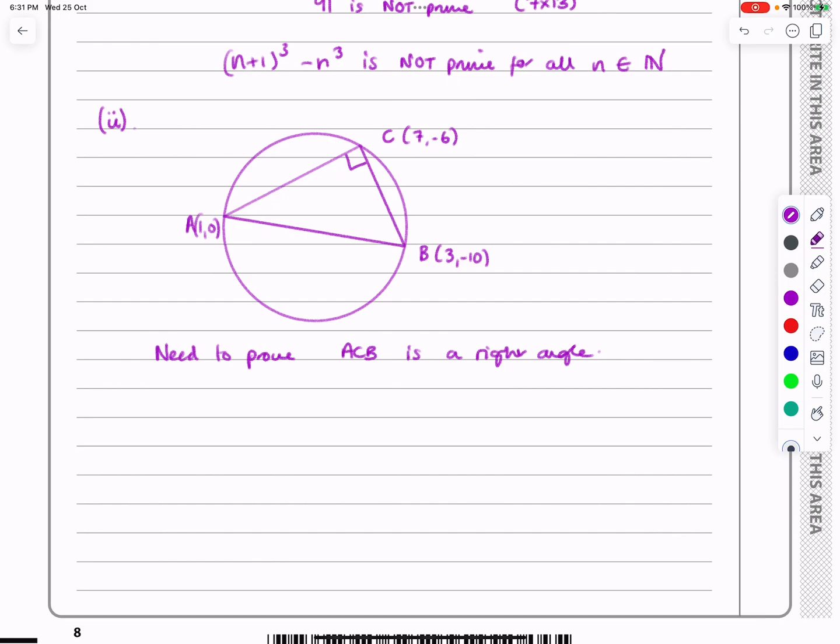And how I'm going to do that is I'm going to work out the gradient of AC. This one, I'm going to work out the gradient of CB, which is this one, and then show that one of them is minus 1 over the other one. And then that will be a proof of 90 degrees.